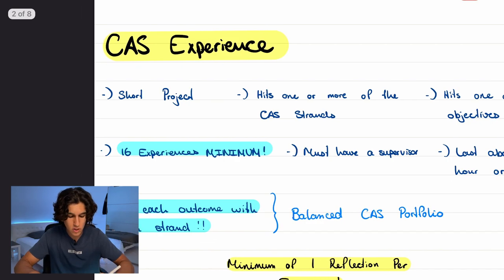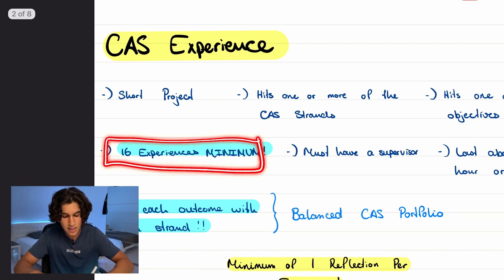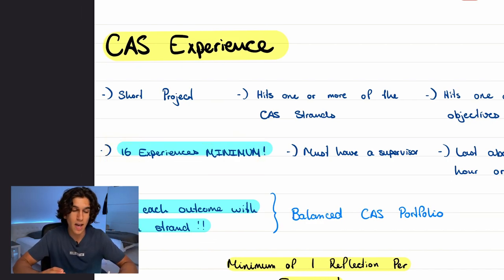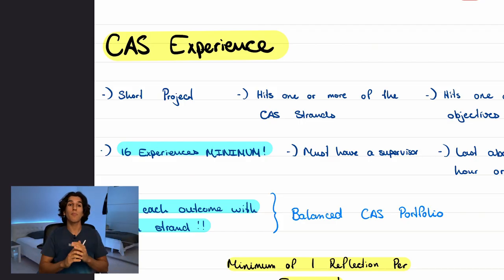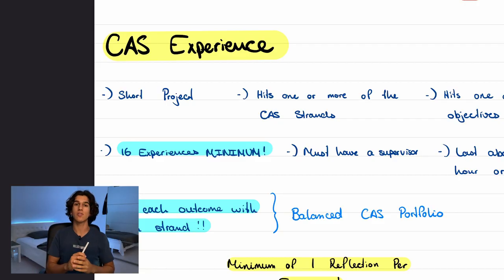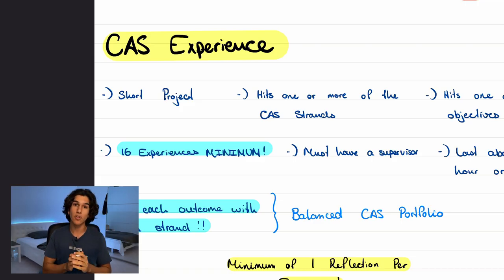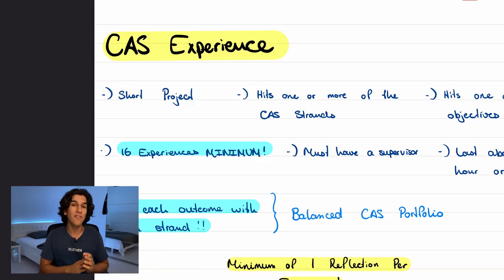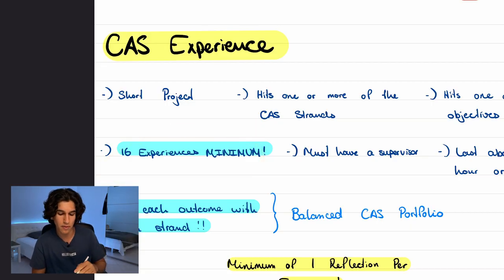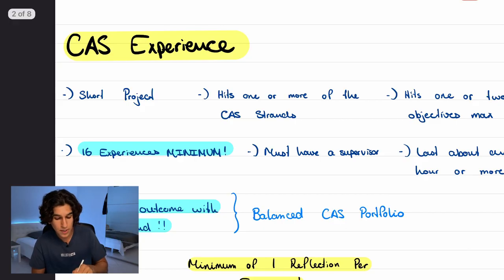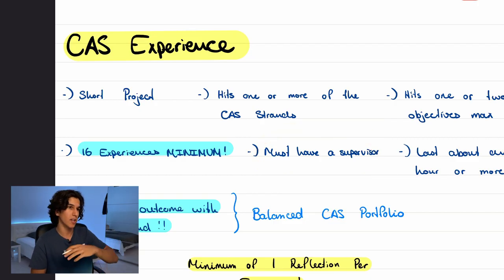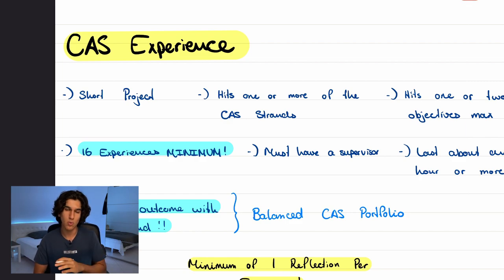Over the two years you need a minimum of 16 experiences — that's a lot of work. You'll predominantly want to focus on CAS during year 12 when you have time, not year 13 when exams are being thrown at you left, right, and center. Get the bulk of it done in year 12. Also, you must have a supervisor who will complete a supervisor review, which we'll cover later.